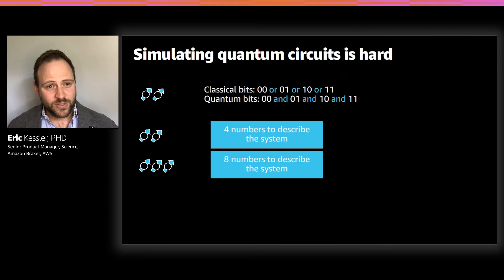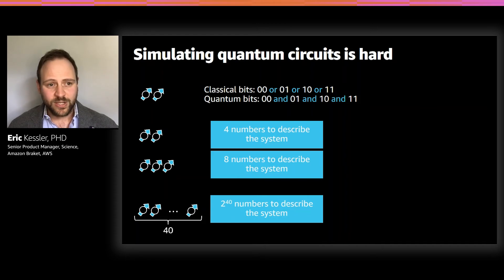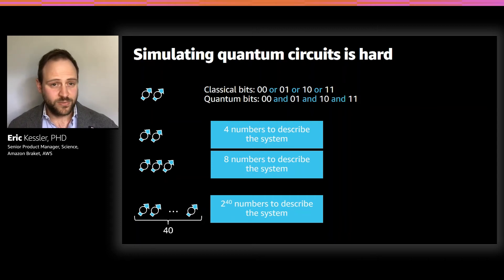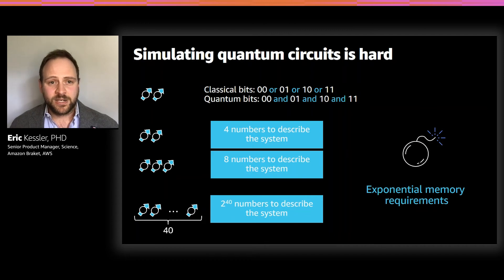If you take that forward — if you want to store the state of a 40-qubit system, we need 2^40 complex numbers to describe that state, which is a one with approximately 12 zeros. So this is a very large number. We have this very naive and direct exponential memory requirement if we just want to write down the state of our system.